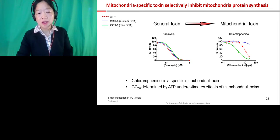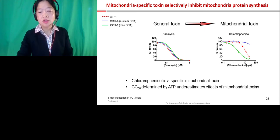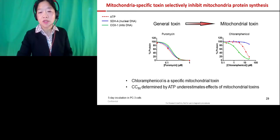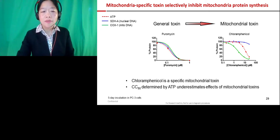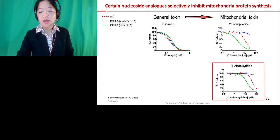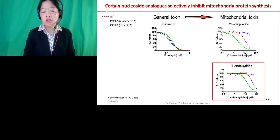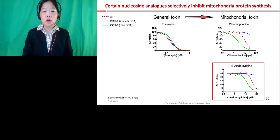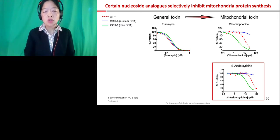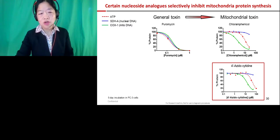I show side-by-side profiles for a general toxin — puromycin — versus chloramphenicol, a specific inhibitor of mitochondrial protein synthesis. The three parameters are: ATP content (dotted red), a nuclear DNA-encoded protein (blue), and COX-1 — the mitochondria-specific encoded protein (green). For the general toxin, everything decreases together with increasing drug concentration. For chloramphenicol on the right, the mitochondria-specific protein expression decreases first. When we apply this to nucleoside antivirals — for example, fluorazidocytidine, which failed phase one due to hematologic toxicity — it shows a very similar pattern to the specific mitochondrial toxin.